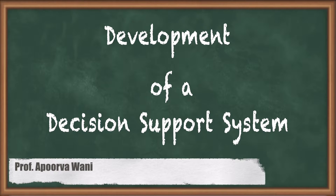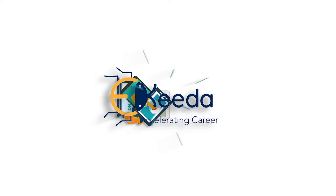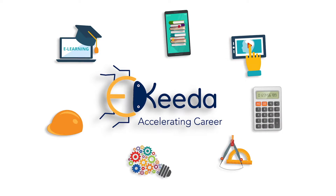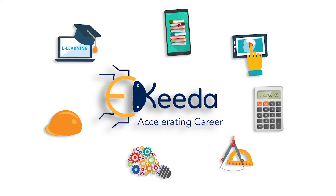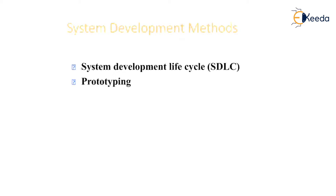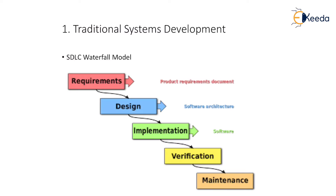Hello friends. In this video we are going to see the development of decision support system in detail. We can develop the decision support system by two ways: first is the system development life cycle and second is prototyping. First we will go one by one. So first we are following the traditional system development method, that is SDLC or a waterfall model. We follow a total of 5 steps.